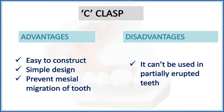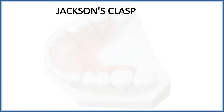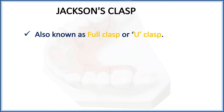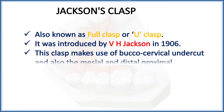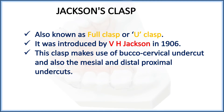This clasp is the Jackson clasp, also known as the full clasp or U clasp. It was introduced by Jackson and hence named so. This clasp makes use of the buccal cervical undercut and also the mesial and distal proximal undercuts. The C clasp only engages the buccal cervical undercut, whereas the Jackson clasp engages the buccal cervical plus mesial and distal proximal undercuts.